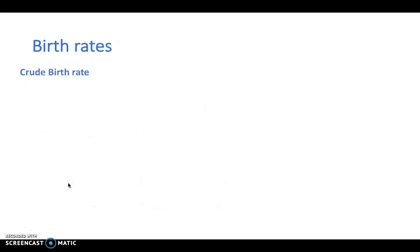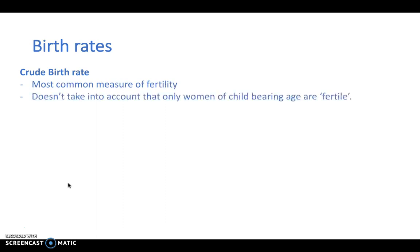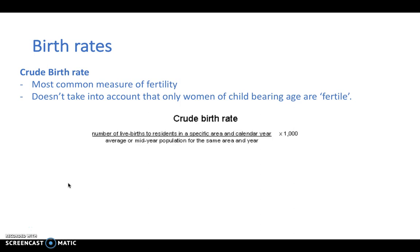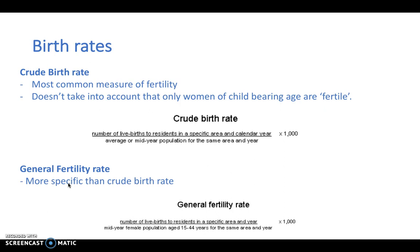For birth rates, the first rate you need to be aware of is the crude birth rate. This is the most common measure of fertility; however, it doesn't take into account that only women of childbearing age are fertile. So this is the number of live births to a residence in a specific area and county year over the average or mid-year population for the same area and year — essentially live births over population times a thousand. The general fertility rate is more specific and takes into account that only those women of childbearing age can give birth. So it's the number of live births divided by the population of childbearing age women in that area times a thousand.